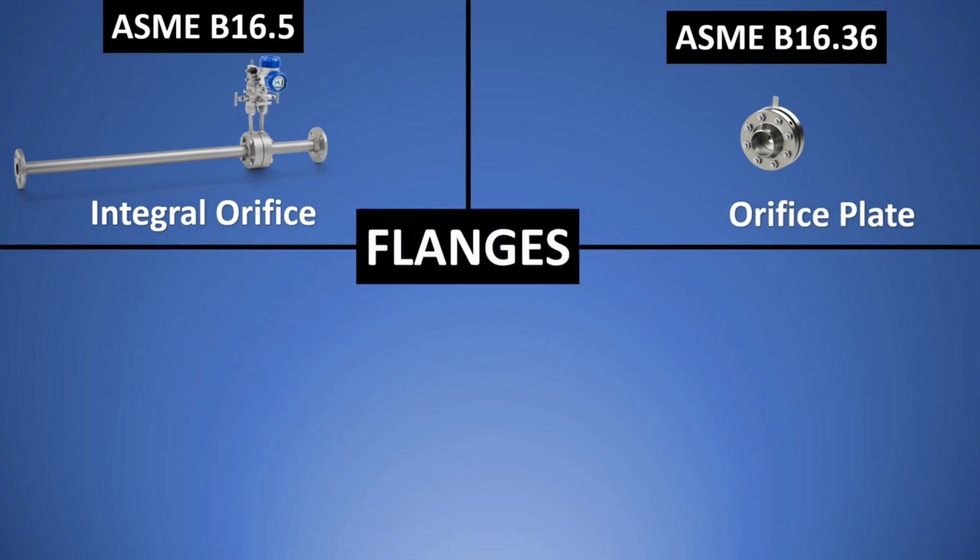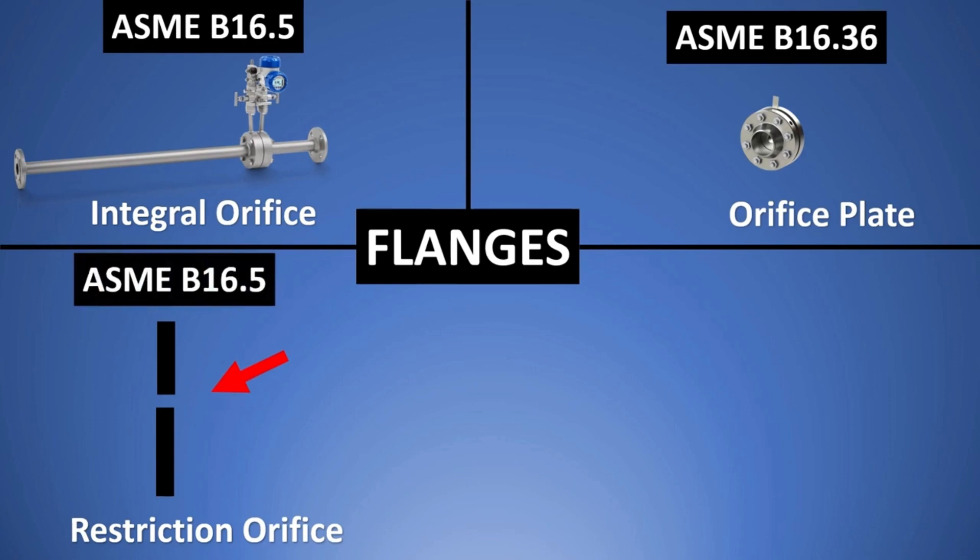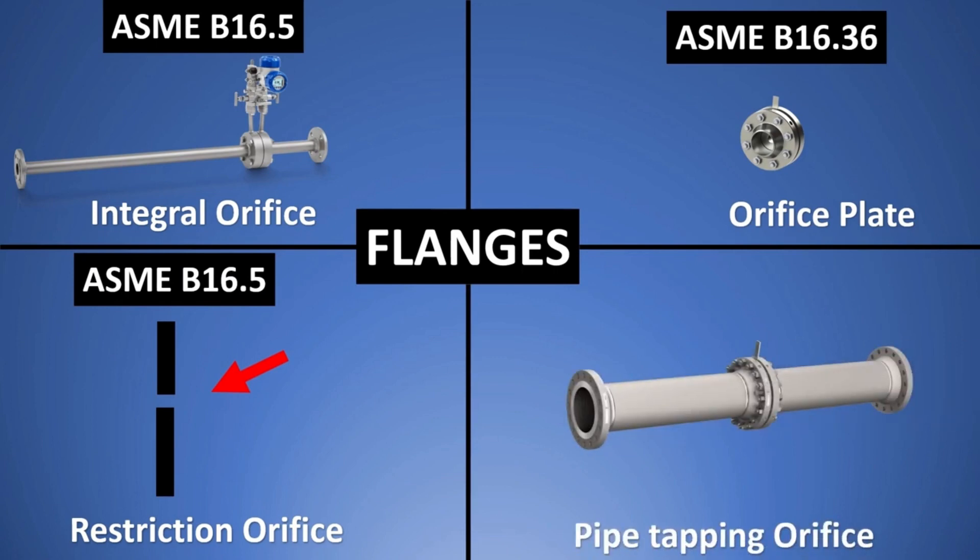Now if you tell me with this understanding for restriction orifice, what would you be using? Will you be using ASME 16.5 or 16.36? The answer is 16.5 because there are no holes drilled in the flanges. So you can use for restriction orifice ASME 16.5. Similarly, for pipe tappings, where tappings will be taken from pipe for very high line size orifice, you don't need any special standard for flanges. So you can go for ASME 16.5.